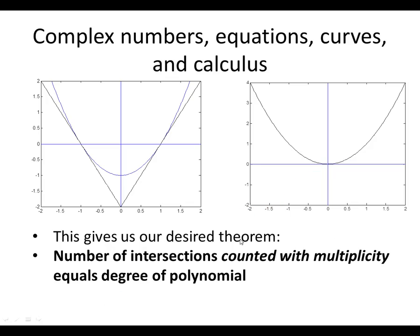So, this really does give us our desired theorem. If you've got y equals p of x, the graph of a polynomial, and you look at how many times it intersects the x-axis, then the number of intersections counted appropriately with multiplicity, certainly a subtle issue, and using complex numbers, does equal the degree of the polynomial.